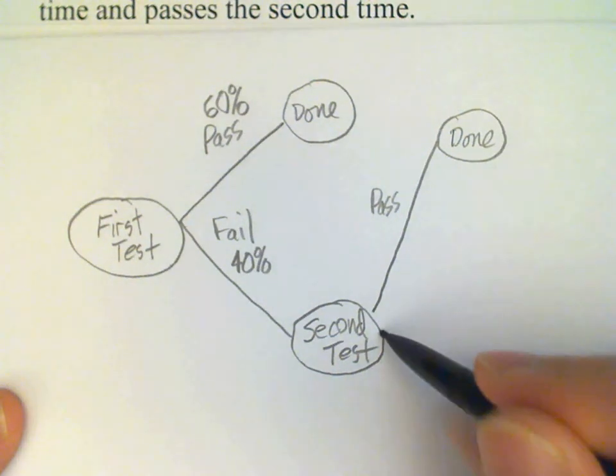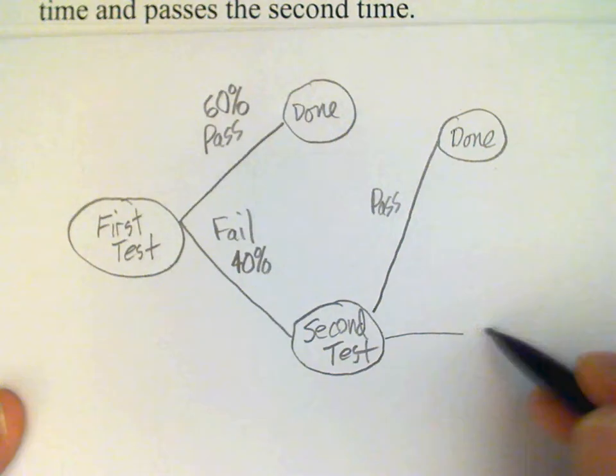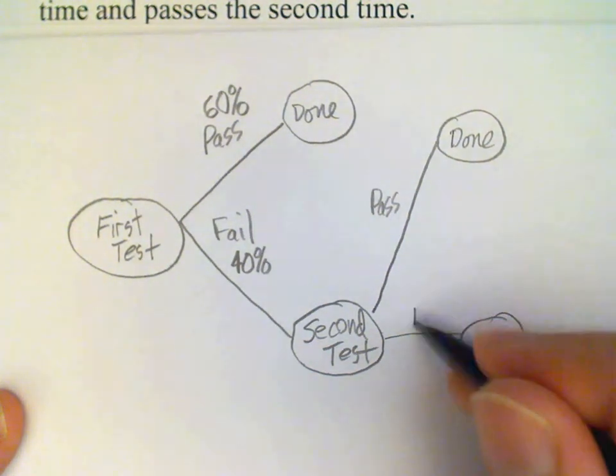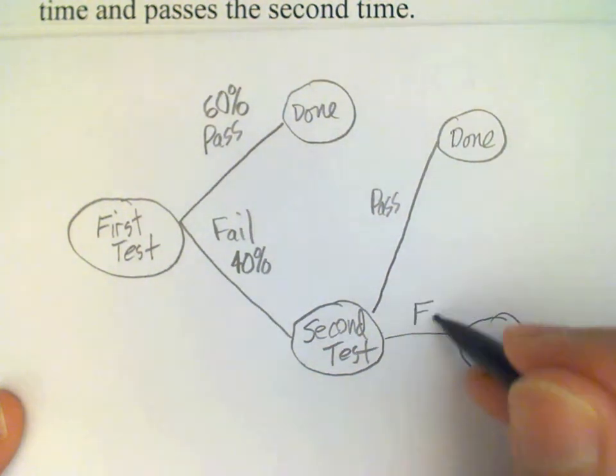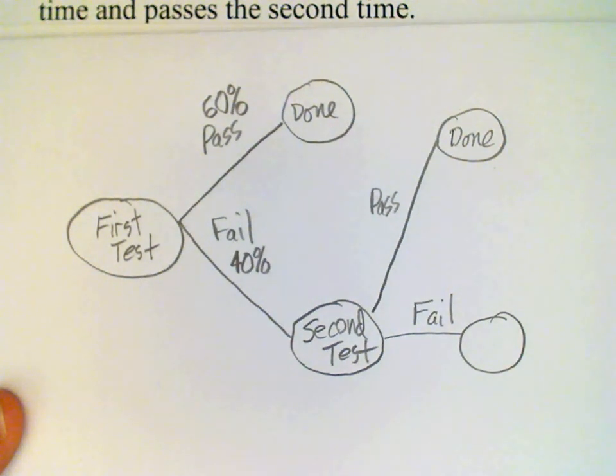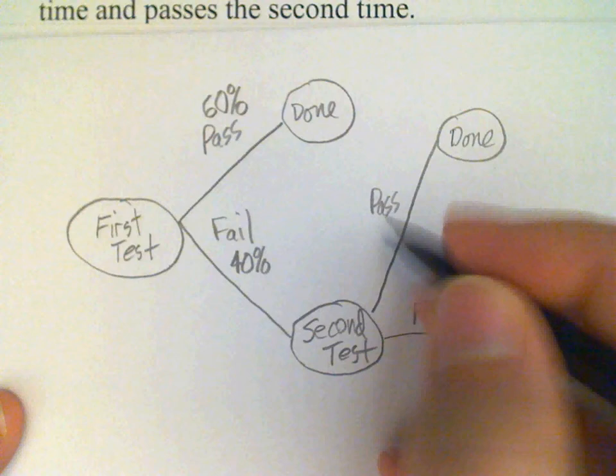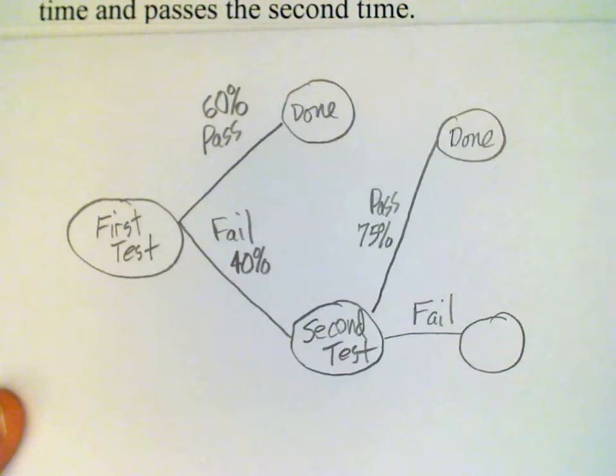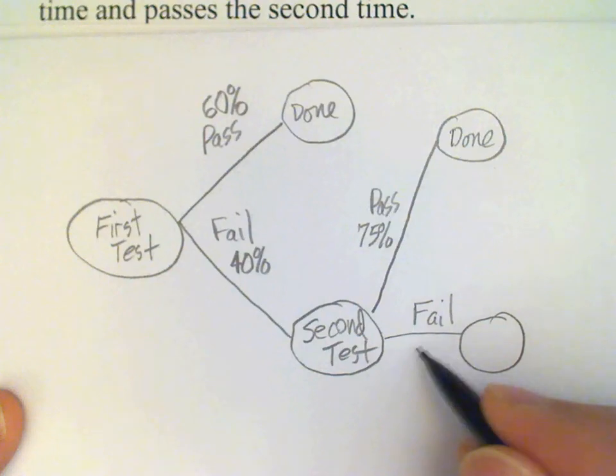And we know that the candidates attempting the test for the second time pass at a 75% rate, and so that means that the candidates who take the test the second time and fail do so at a 25% rate.